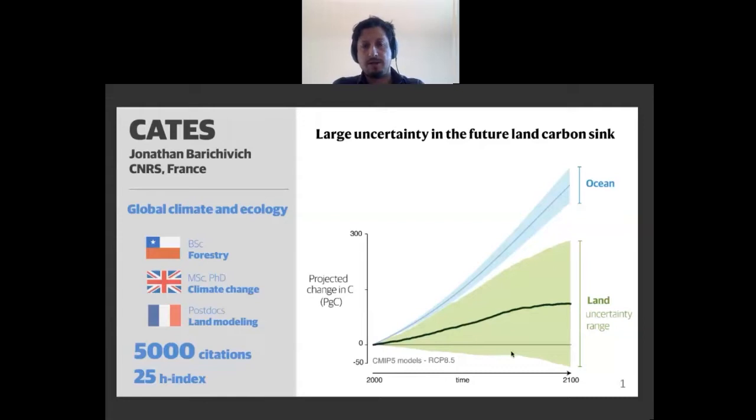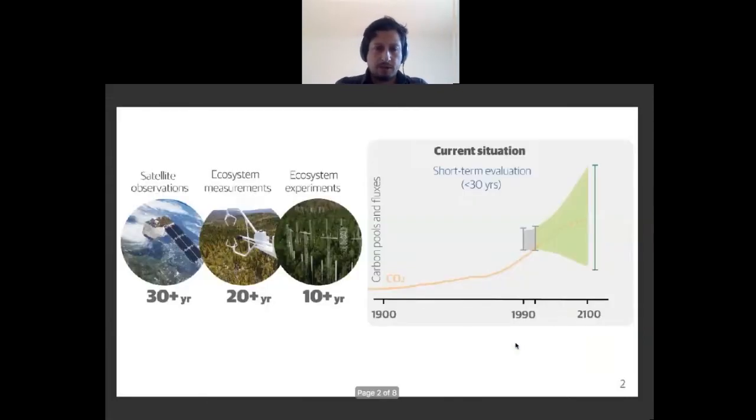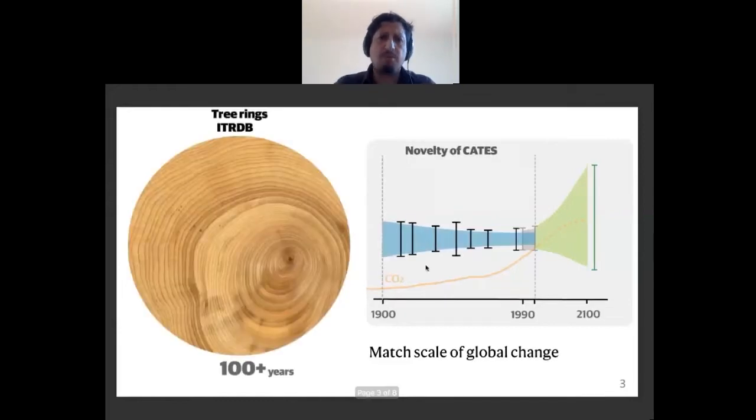This uncertainty is rooted in the ecology of land surface models and directly impacts climate change projections and climate policy. So far, these models have been calibrated with data sources hardly exceeding 30 years. This short-term calibration leads to a large model spread toward the future.